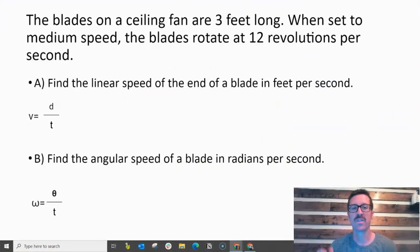Let's do our second example. The blades on a ceiling fan are 3 feet long. When set to medium speed, the blades rotate at 12 revolutions per second. So let's first find the linear speed.